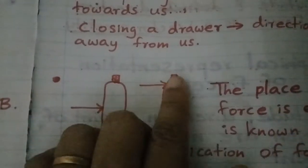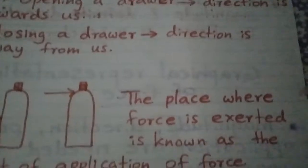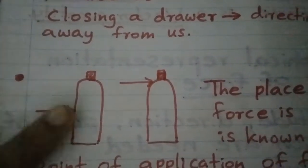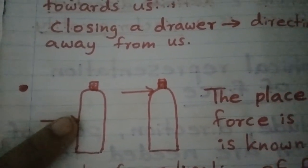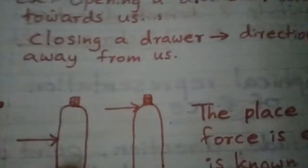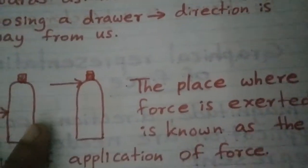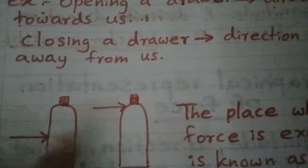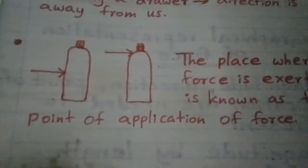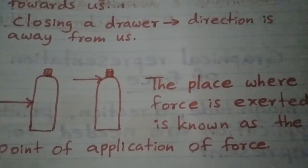Look at this diagram — you can see a bottle with force being applied at two different points. If you apply force at one point, the bottle does not fall, but if you apply force at the other point, the bottle may fall. The place where force is applied is known as the point of application of force.